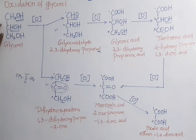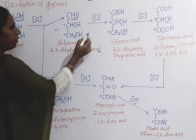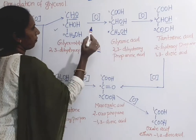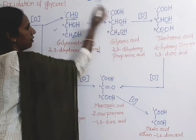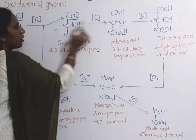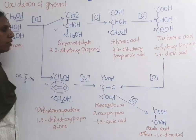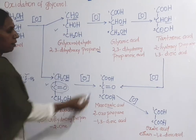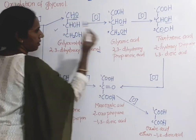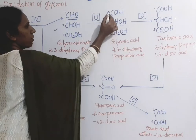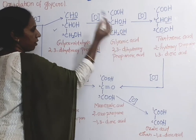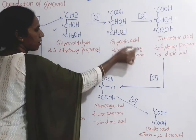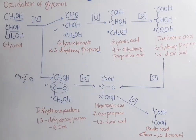In the next step, glyceraldehyde is oxidized to form glyceric acid. The aldehyde CHO is oxidized to COOH (an acid), giving the structure COOH-CHOH-CH2OH, which is glyceric acid. Its IUPAC name is 2,3-dihydroxypropanoic acid — first carbon, second carbon, third carbon — with a hydroxy group on the second carbon and a hydroxy group on the third carbon.